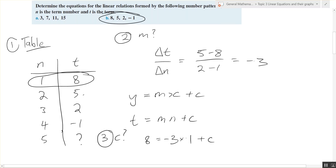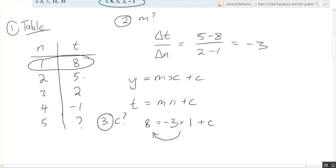Then negative three times one is negative three. We want to bring that to the other side of the equals. If we're bringing negative three to the other side, what do we do? We add three to both sides. So it becomes 11 equals C.